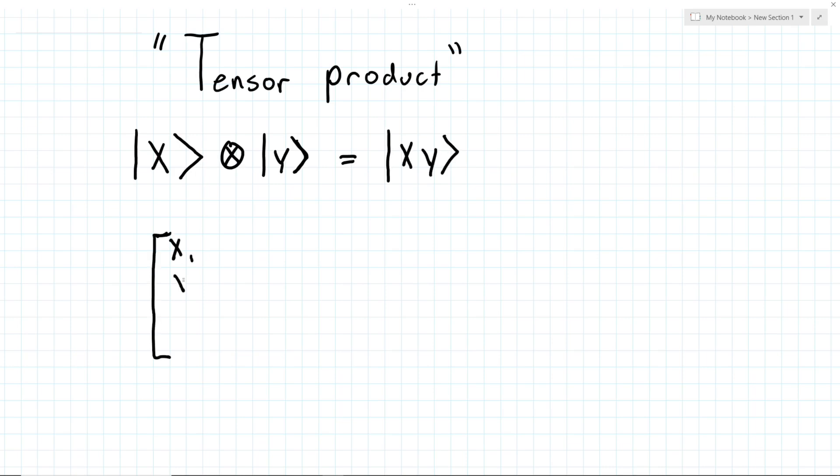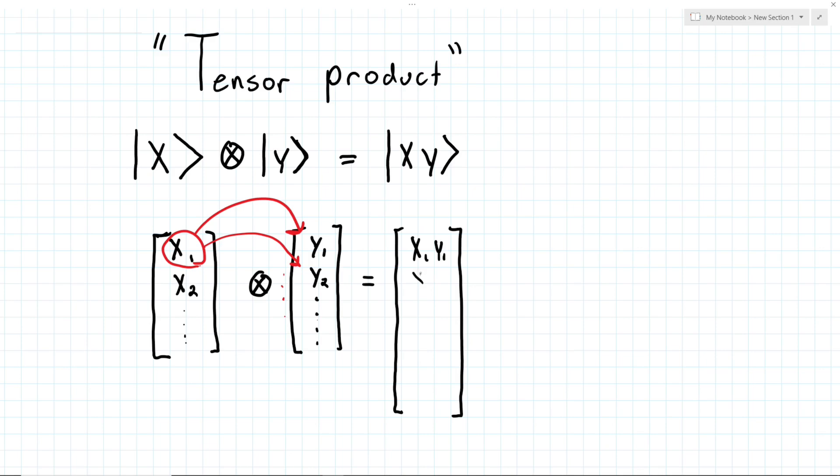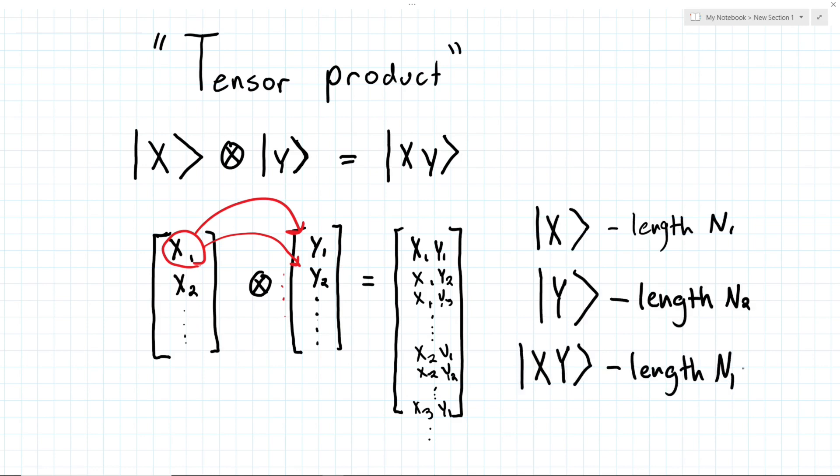So how do we take the tensor product of two vectors? Well, it's pretty simple actually. We multiply each entry in the vector on the right by the first entry on the left. Then we move to the second entry on the left, and multiply that by the entire vector on the right. When we are doing this, we place each new vector below the other. We repeat this for each value in the left vector, so our final vector will be equal to the length of the left vector times the length of the right vectors.